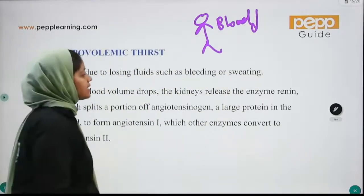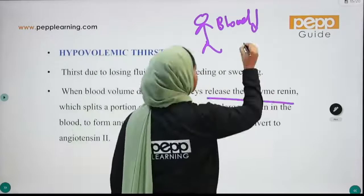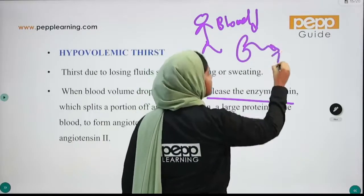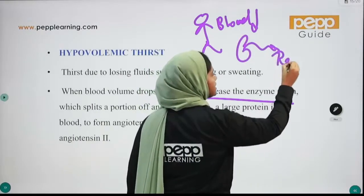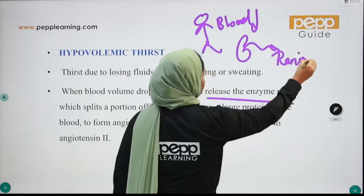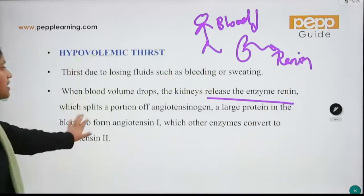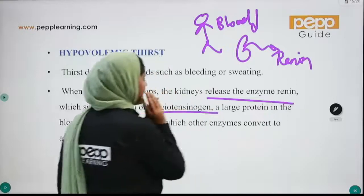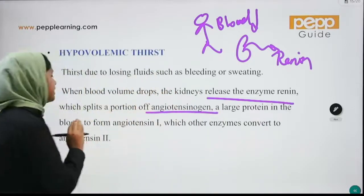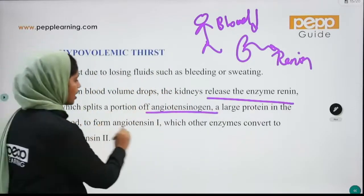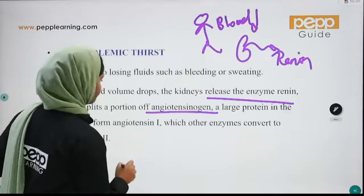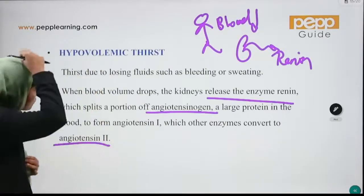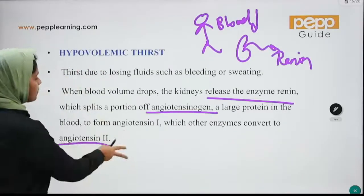When blood volume decreases, the kidney releases an enzyme called renin. Renin is an enzyme which splits a portion of angiotensinogen — a large protein in the blood — to form angiotensin 1, which another enzyme then converts to angiotensin 2.